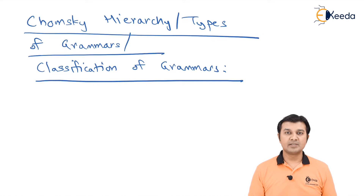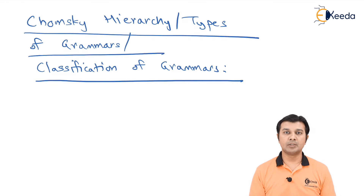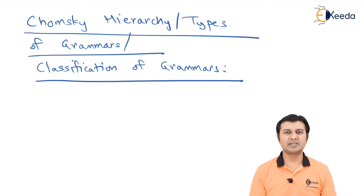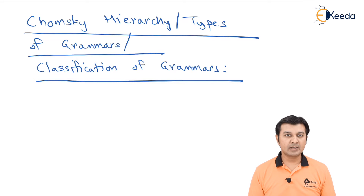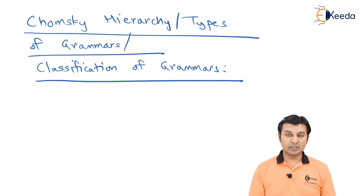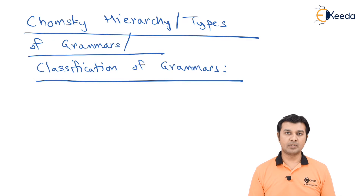The next important short note that we have over here is Chomsky Hierarchy. This comes as a theory answer in five marks for the main exam. The question over here says: explain Chomsky Hierarchy, or explain the types of grammar, or classification of grammar.